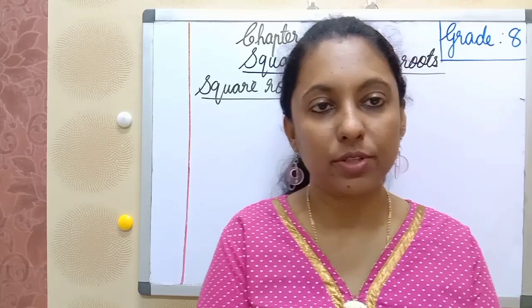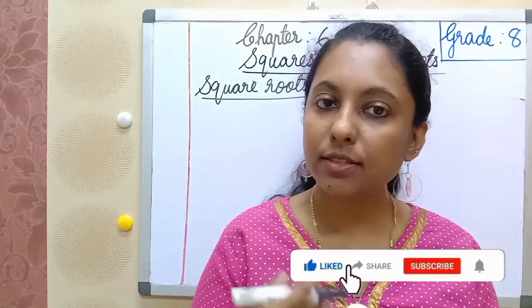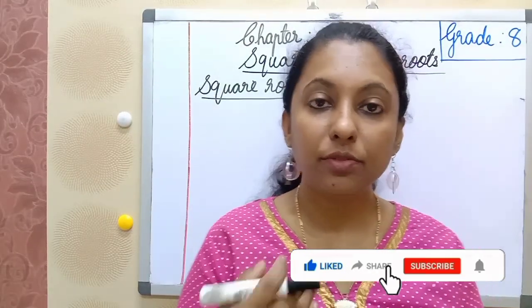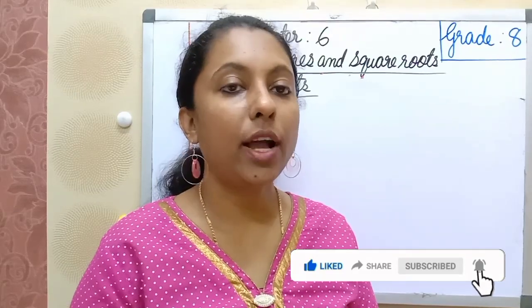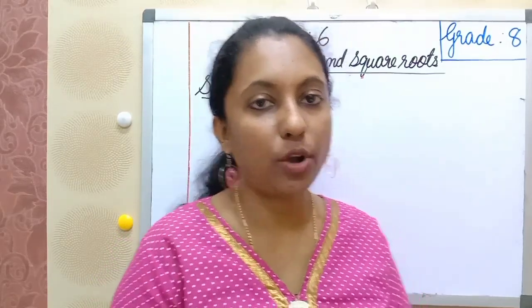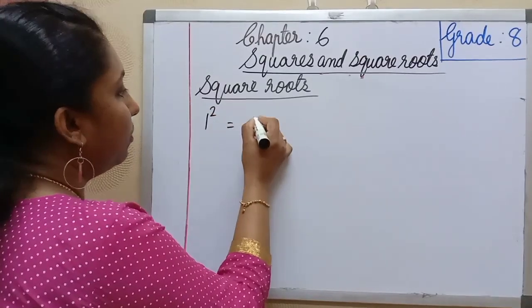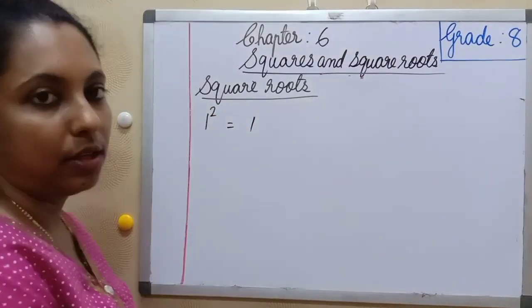Finding square roots — how to find the square root of a number. We can check the inverse operation: the inverse of addition is subtraction, and the inverse of multiplication is division. So finding the square root is the inverse of squaring.